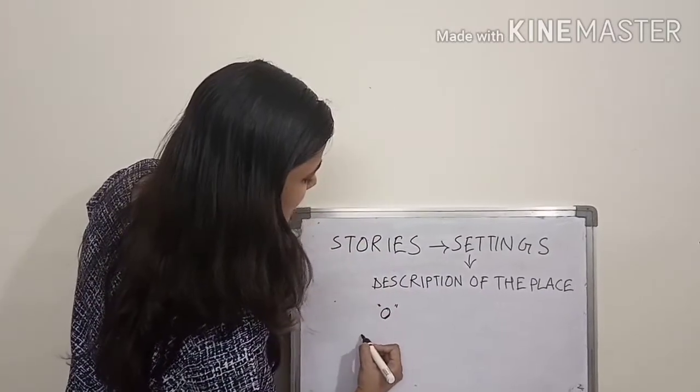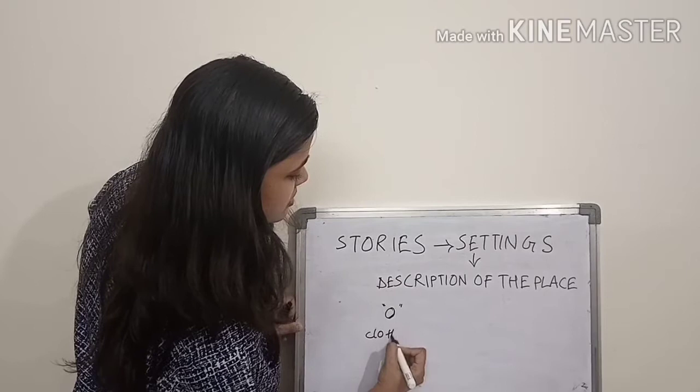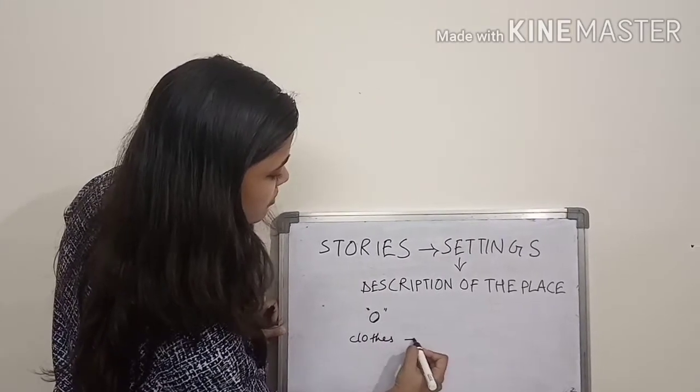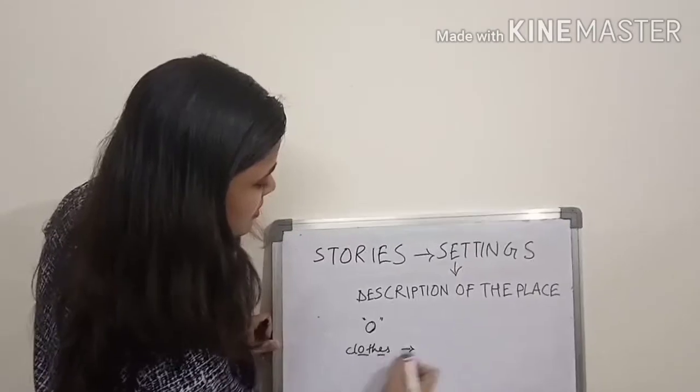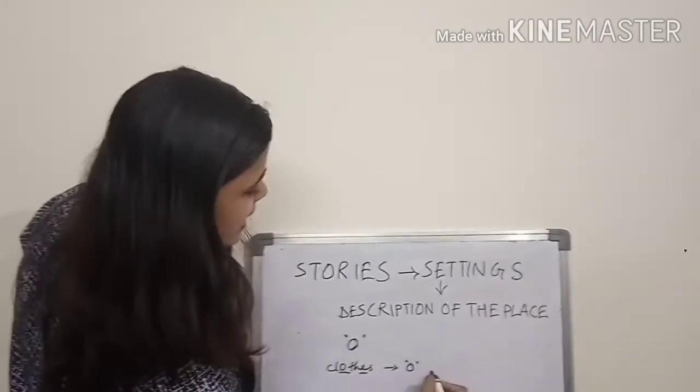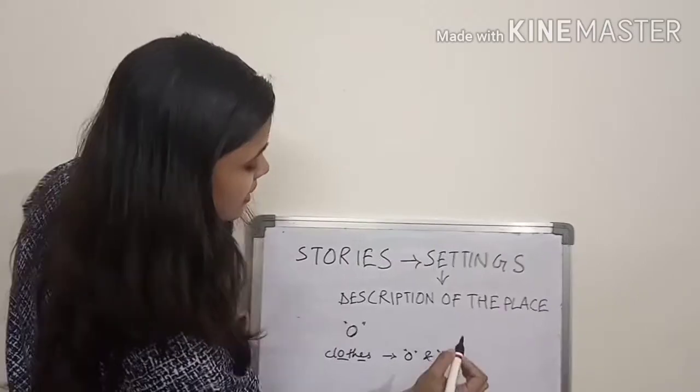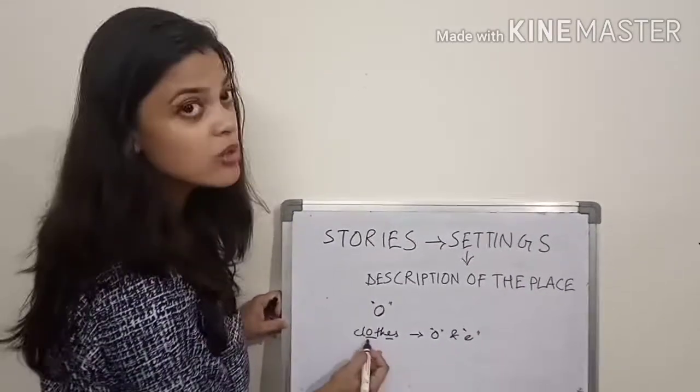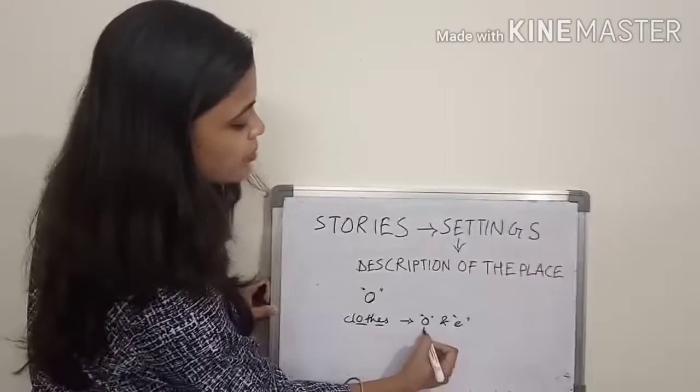Say for example, I take this word clothes. Here, there are two vowels, O and E. How is O pronounced here? Clothes. So it's a long pronunciation.